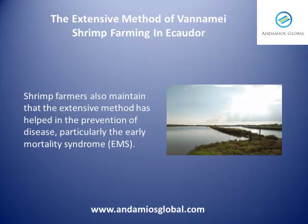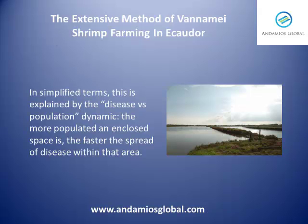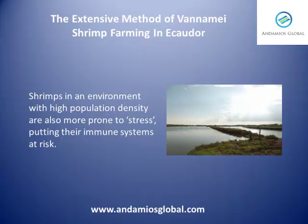Shrimp farmers also maintain that the extensive method has helped in the prevention of disease, particularly the early mortality syndrome, EMS. In simplified terms, this is explained by the disease versus population dynamic: the more populated an enclosed space is, the faster the spread of disease within that area. Shrimps in an environment with high population density are also more prone to stress, putting their immune systems at risk.